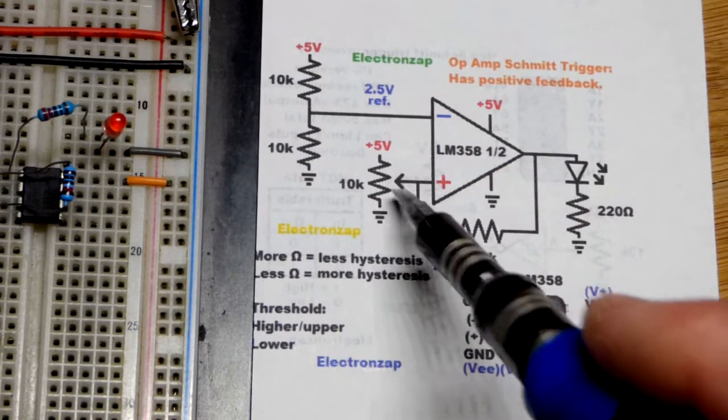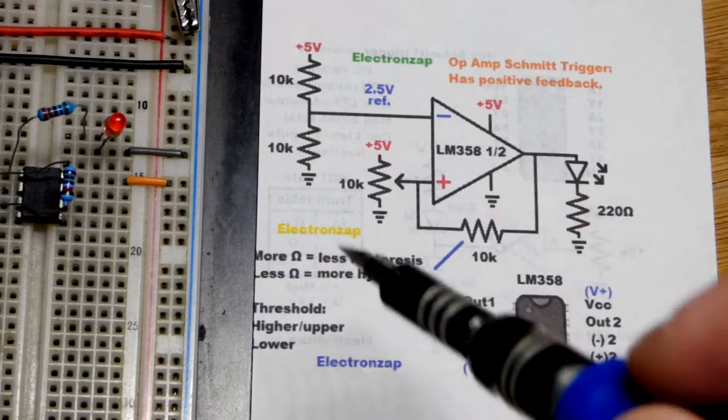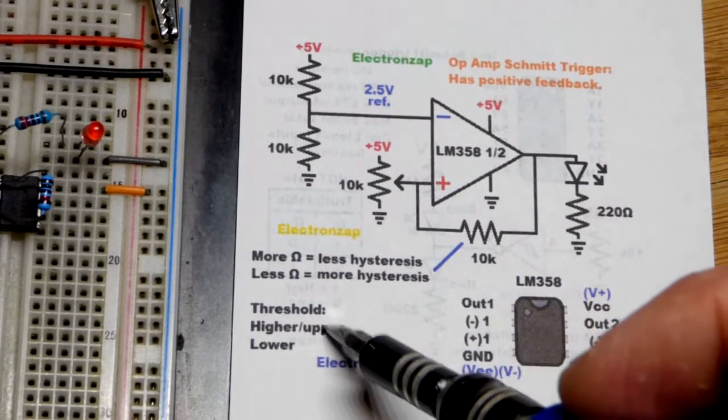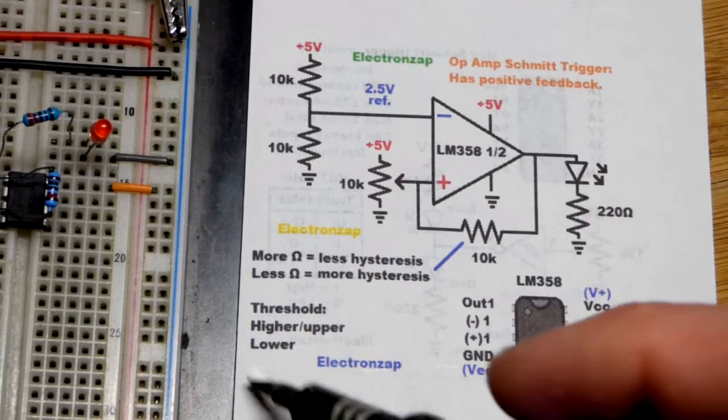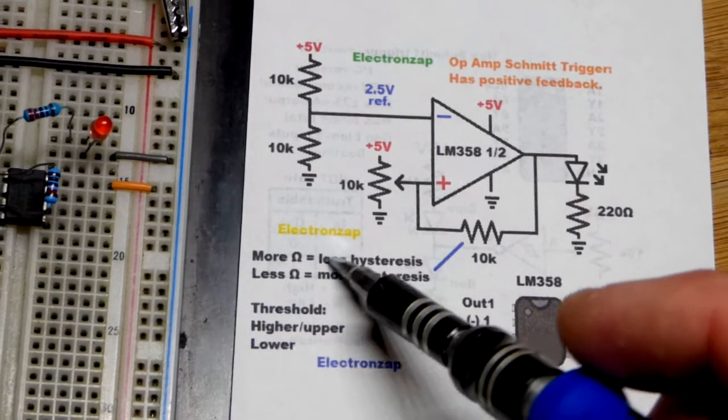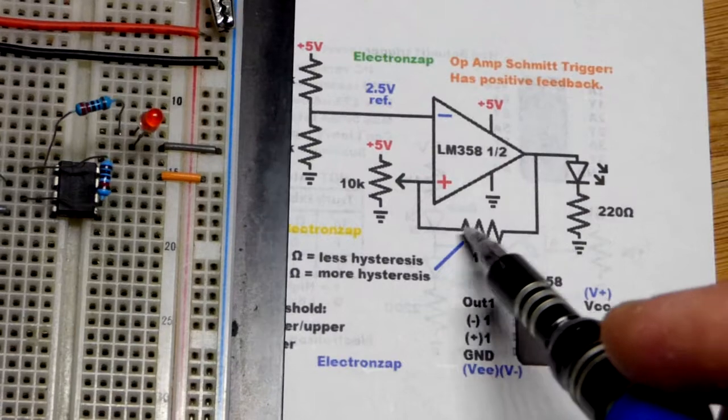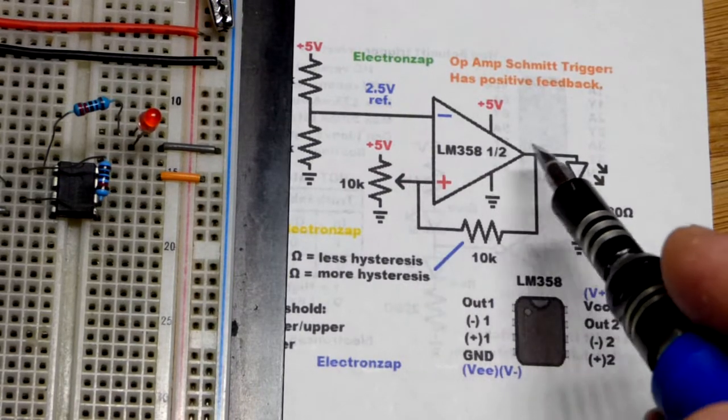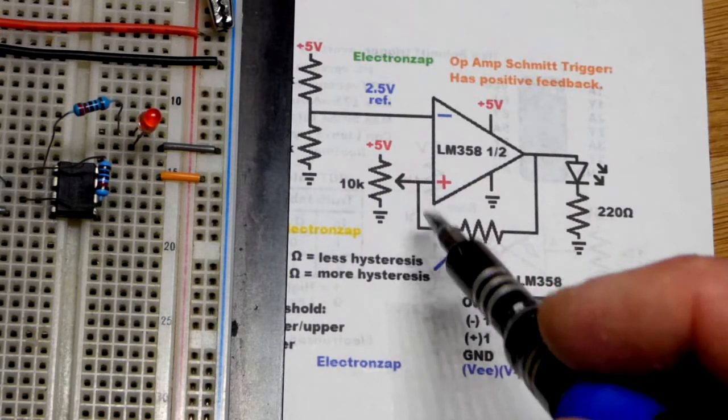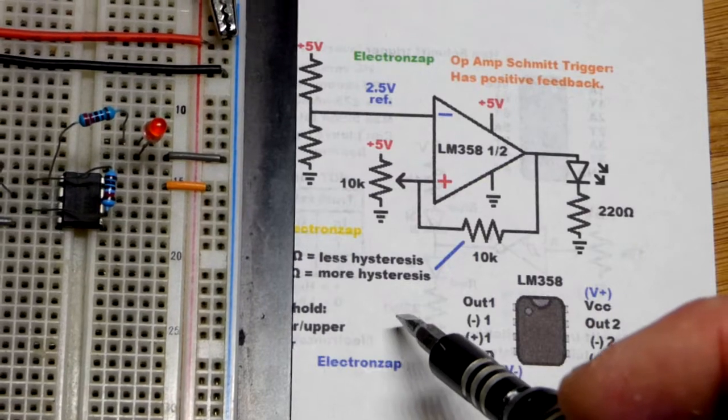We couldn't see what the trim pot was doing. That's how we'll see the hysteresis. We'll see where the upper threshold is and the lower threshold. Also, you get more hysteresis with a lower resistance and less hysteresis with a higher resistance. So you can adjust it as needed.